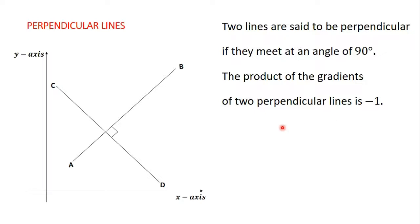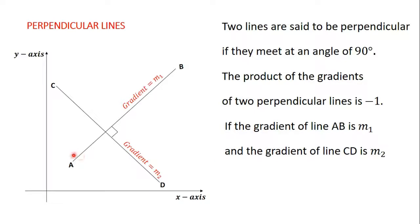So if two lines are perpendicular, if you multiply their gradients, you are going to get negative 1. So on this diagram, if the gradient of line AB is M1 and the gradient of line CD is M2, and line AB and CD are perpendicular to each other, then M1 times M2 is equal to negative 1.